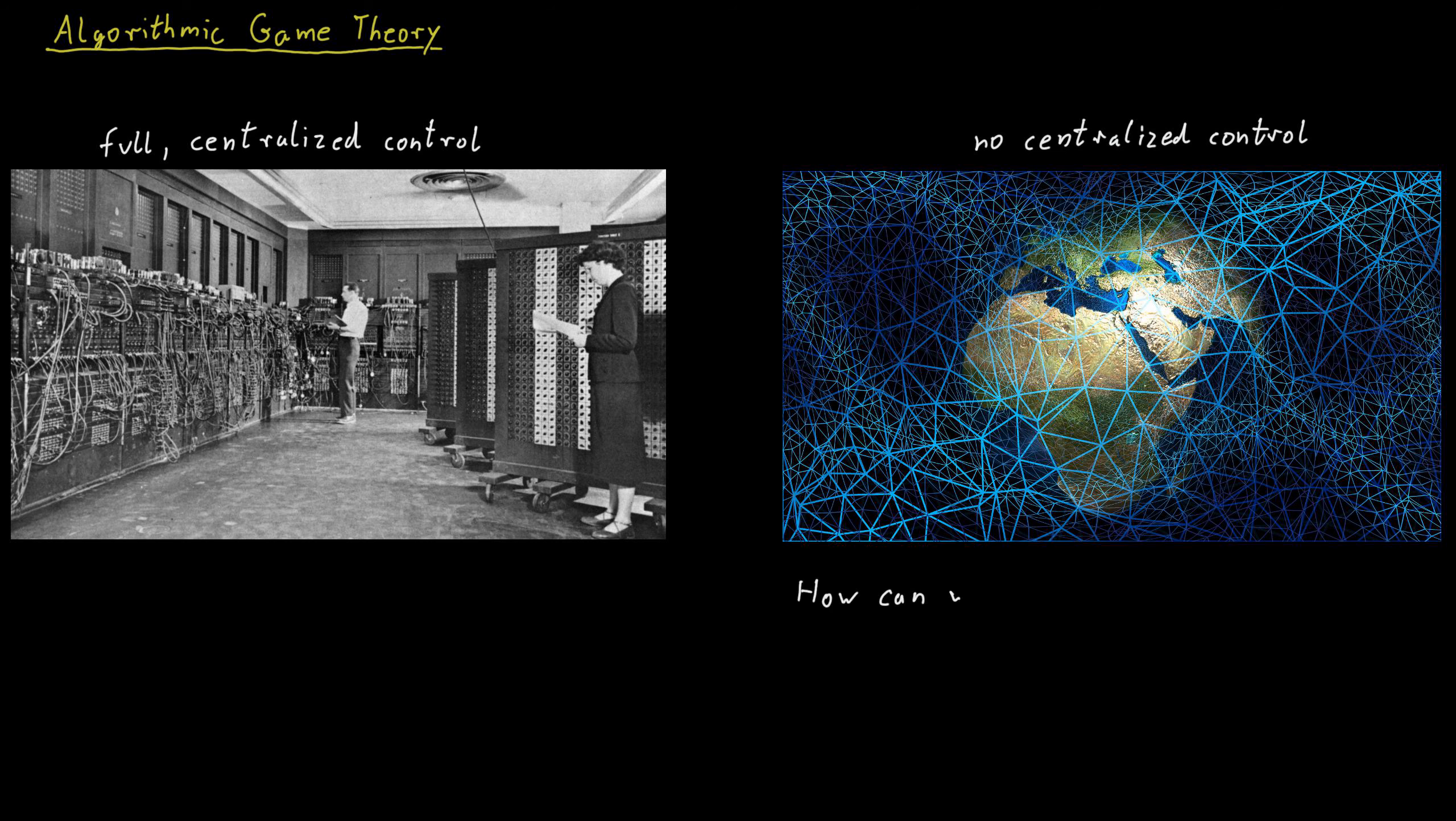How can we build such a system? How can we understand such a system? And how can we improve such a system? For this reason, concepts from game theory started to be of interest to computer scientists.